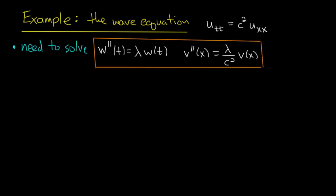We're now on the third step: solving these equations. I suggest setting c = 1 and trying λ = 1, λ = 0, and λ = −1 to see how different the solutions are. It's necessary to split the process into cases based on the sign of lambda. Let's do the simplest case first: lambda equals zero.